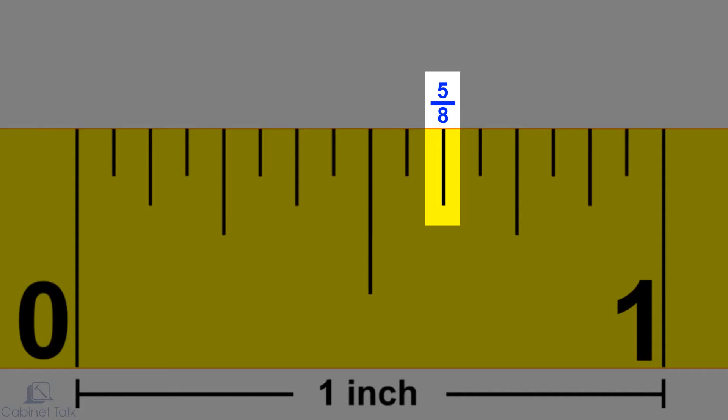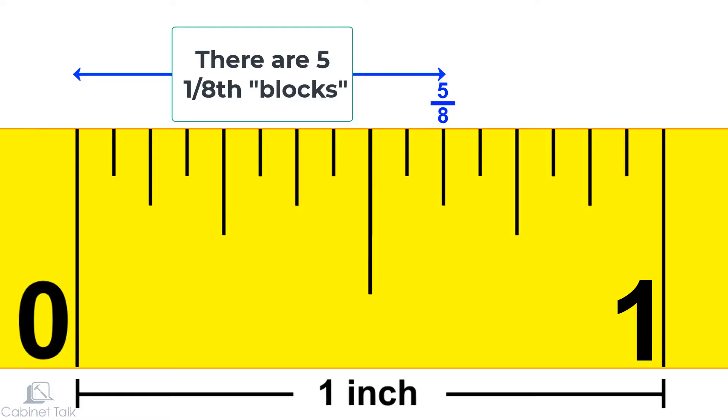If we wanted to find five-eighths, for example, we would count each one-eighth block like this. Since there are five one-eighth-inch blocks, this mark is five-eighths.